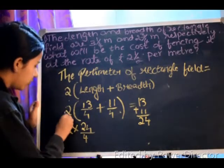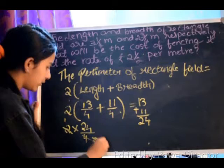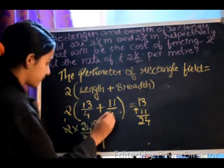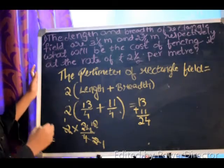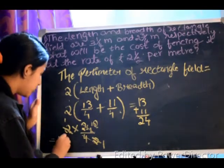Simplifying: 2 cancels with 4, 2 cancels again, giving us 12. So the total meters of fencing we have is 12 meters.